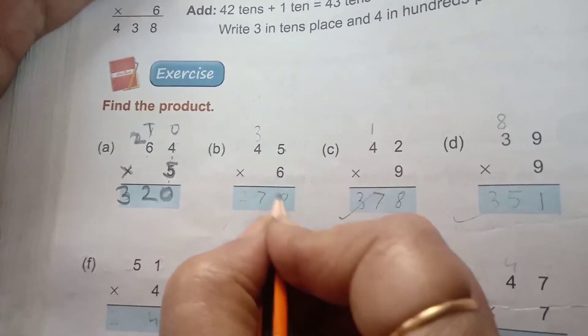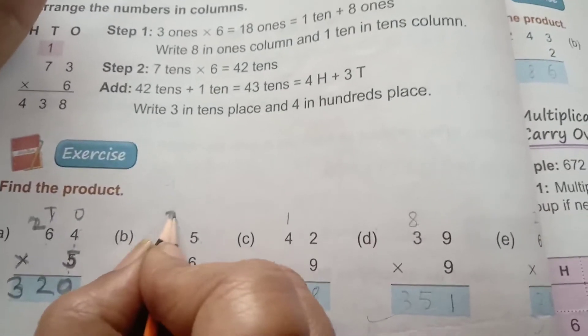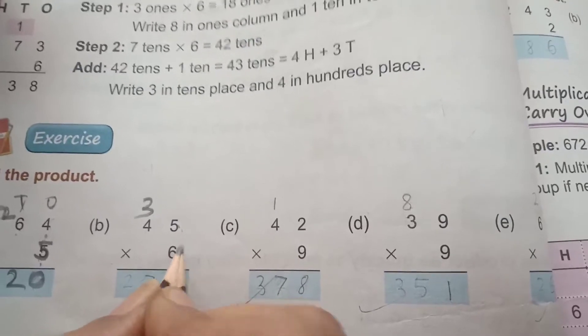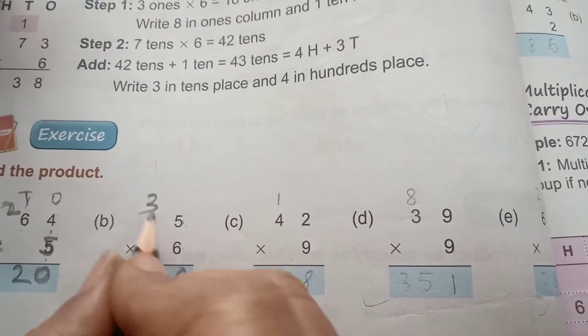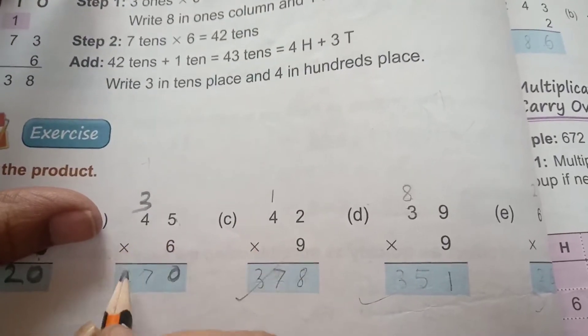Now, 45 multiplied by 6. 6 fives are 30, carry 3. 6 fours are... 6 ones are 6, 6 twos are 12, 6 threes are 18, 6 fours are 24, plus 3, 27.